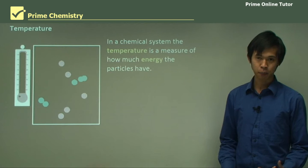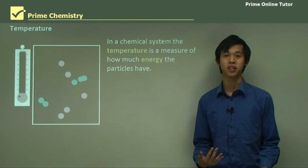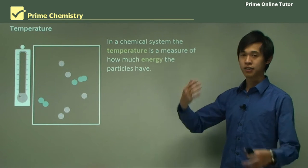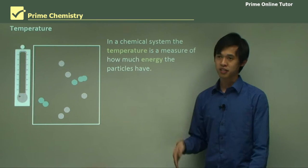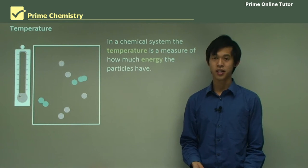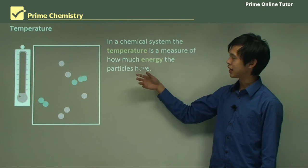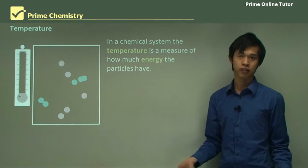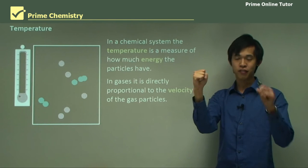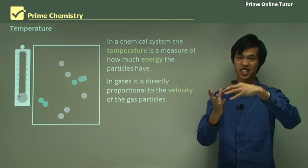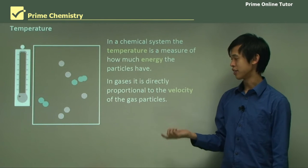First, we need to talk about temperature, otherwise we're not going to get an idea of how the conditions in an engine work. In a chemical system or any sort of gas system, the temperature is a measure of how much energy the particles have. For those who studied the Maxwell-Boltzmann distribution, you'll understand this really well. Basically, the temperature tells you how fast these particles are moving. In a gas, temperature is directly related to the velocity of the gas particles.